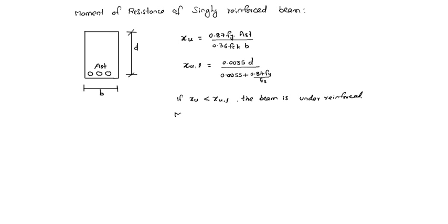MU equals stress in compression concrete, 0.36 fck, times area of compression zone B into XU. This is compressive force into lever arm. Lever arm is D minus 0.42 XU. 0.42 XU is point of application of compressive force from top fiber, so lever arm is D minus 0.42 XU. This is the ultimate moment of resistance.